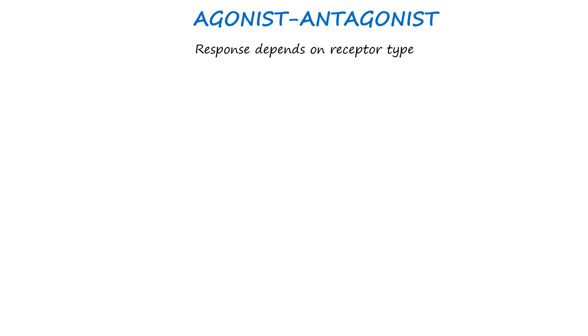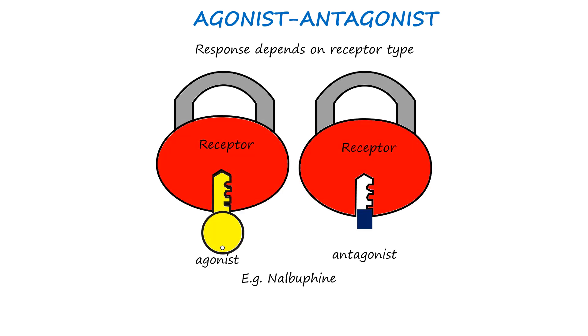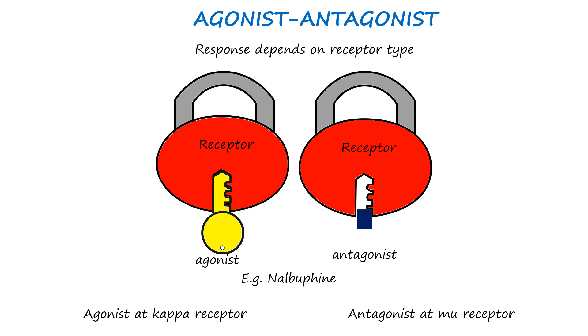Agonist-antagonists have dual actions: they act as agonists at one type of receptor and antagonists at another. Nalbuphine is a relevant example in anesthesia — it acts as an agonist at kappa opioid receptors, providing pain relief, while simultaneously acting as an antagonist at mu opioid receptors. This mixed action is advantageous because it can offer analgesia while reducing the risk of adverse effects associated with mu opioid agonists, such as respiratory depression, though the analgesic effect will not be as strong.